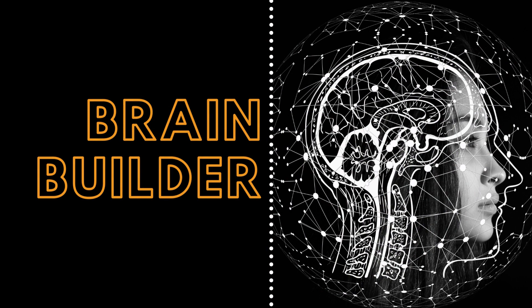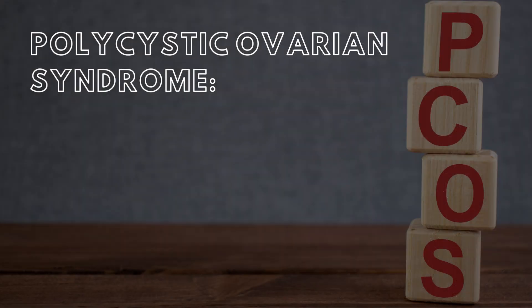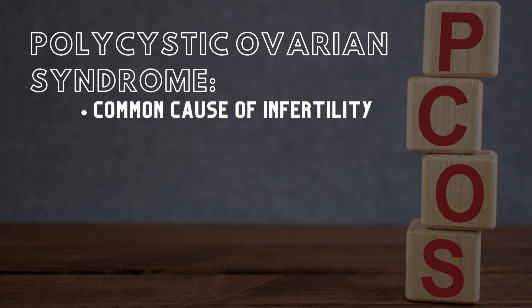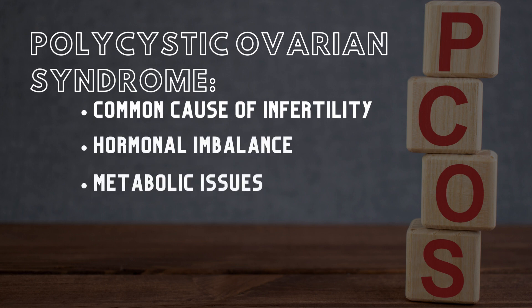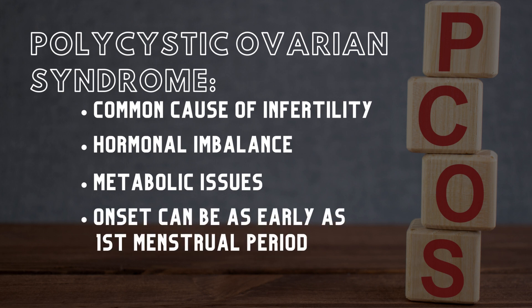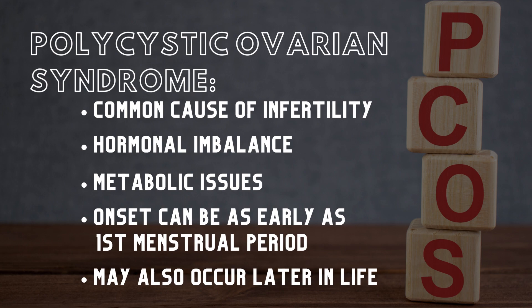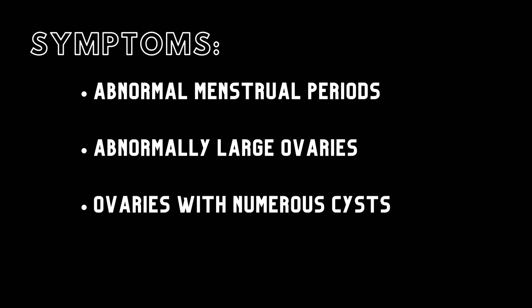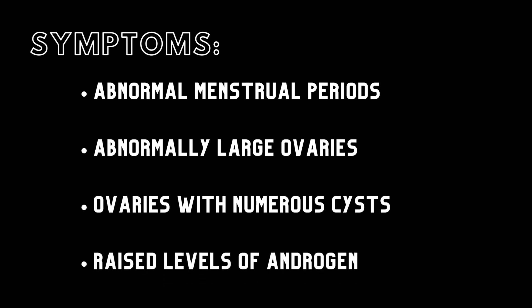Next, we will look at the symptoms, causes, and treatments for polycystic ovarian syndrome, and then give a patient example. Polycystic ovarian syndrome, or PCOS, is one of the leading causes of female infertility. Females with PCOS experience a hormonal imbalance and metabolic issues that can potentially affect the individual's long-term health. Symptoms can start around the first menstrual period or later in life. To make a positive diagnosis for PCOS, a female will typically have abnormal menstrual periods that are irregular in duration or frequency, ovaries that are abnormally large or have numerous cysts, and elevated levels of androgen.